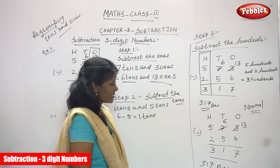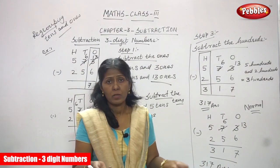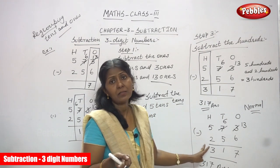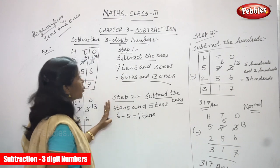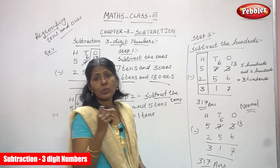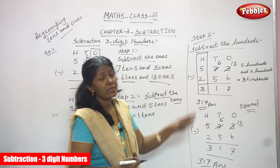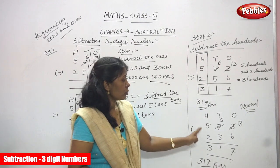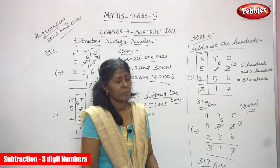Both methods give the same answer: 317. You can choose whichever method is convenient for you and follow it. But I suggest the traditional normal method because it takes less time. The regrouping method is a step-by-step process where you can get the answer without any mistake, but it is a time-taking process. The normal method is simpler and quicker, but you need a lot of practice. I suggest this method only.